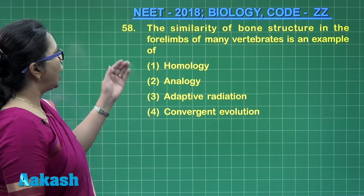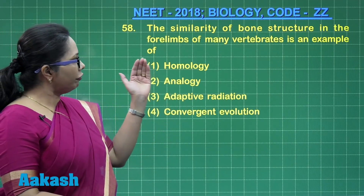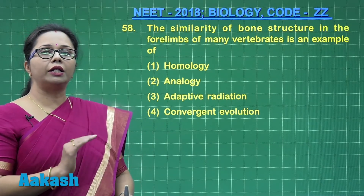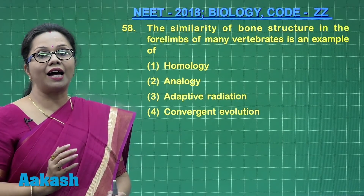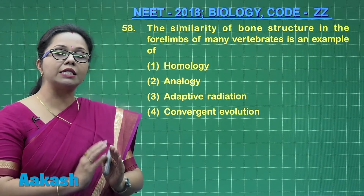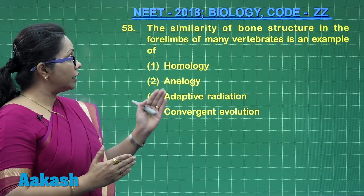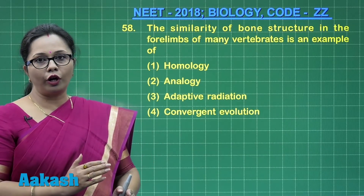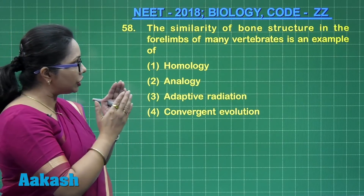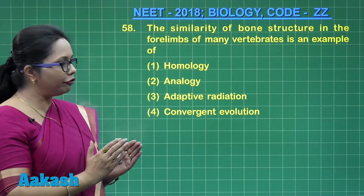Question 58: The similarity of bone structure in the forelimbs of many vertebrates is an example of — in vertebrates with limbs, there is the same basic design, also called intelligent design by some evolutionists, which they believe evolved once and passed from one organism to another. In the forelimb, this includes the humerus, radius, ulna, carpals, metacarpals, and phalanges. This similarity among related species is called homology, leading to divergent evolution.